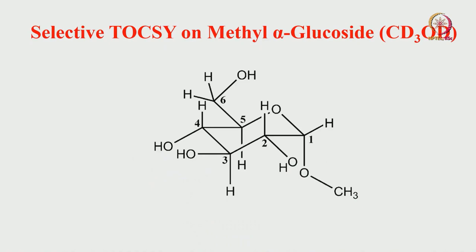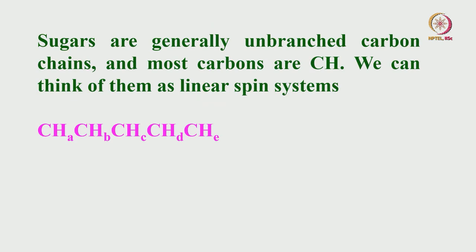I took a simple example of one molecule, though in the last 2-3 minutes of the previous class I did not go through it very carefully and simply rushed through due to time. Now we will take that molecule again and see one or two examples before going to a different topic. I will start with the analysis of a simple molecule — selective TOCSY on methyl alpha glucoside in a particular solvent. As I mentioned, when sugars are present, most of the time they are generally unbranched carbon chains, and most carbons are CH's, so we can think of them as a linear system.